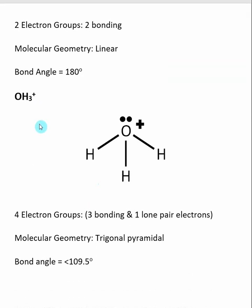For OH3+, the central atom is oxygen. The oxygen has one, two, three, four groups of electrons. Of these four, three are bonding, and we have one set of lone pair electrons. That gives us a molecular geometry of trigonal pyramidal.